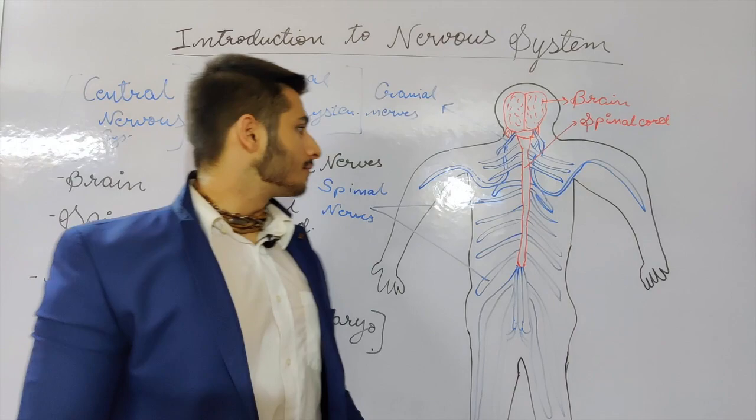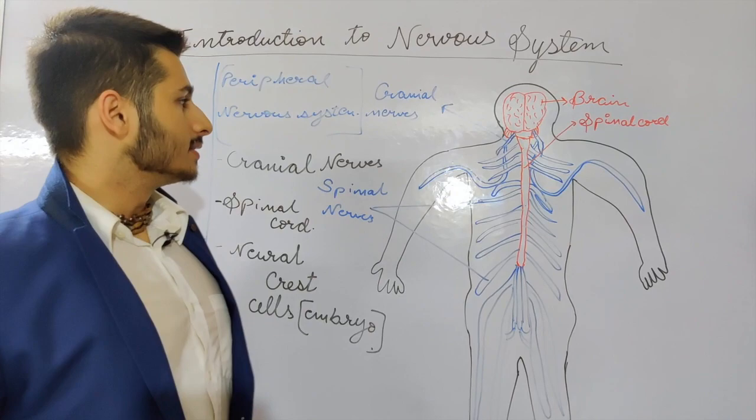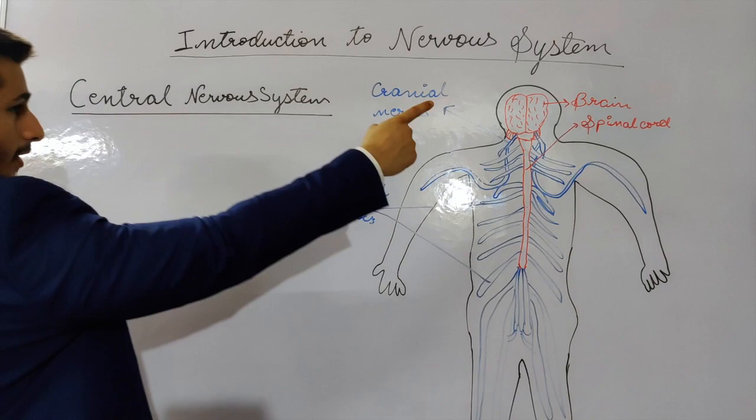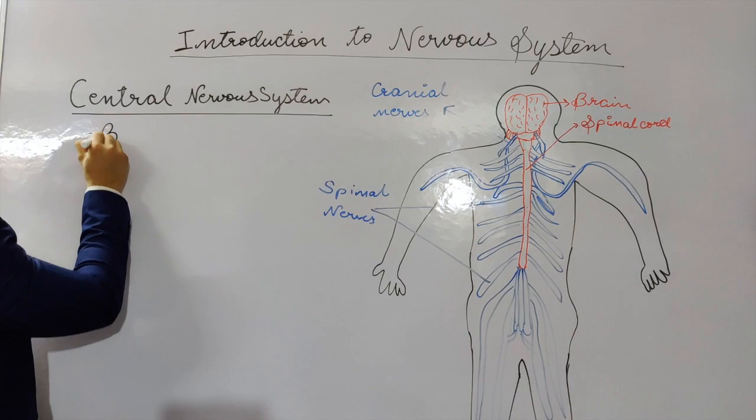The CNS — the brain and the spinal cord — develops from the neural tube in the embryo, whereas the parts of the PNS arise from the neural crest cells. The central nervous system is composed of the brain and the spinal cord. The parts of the brain are the cerebellum, the brainstem, and the cerebrum.